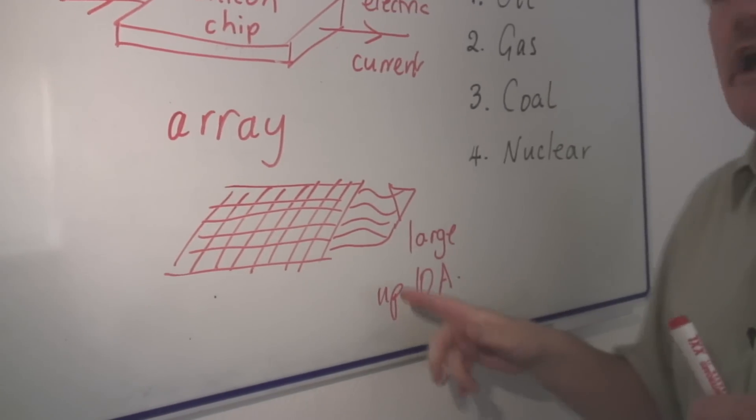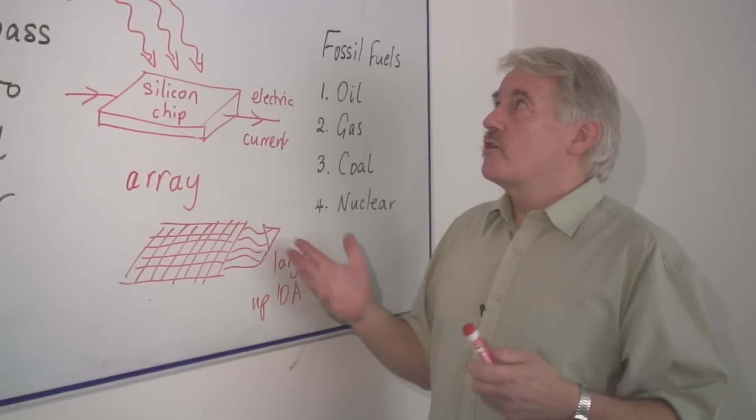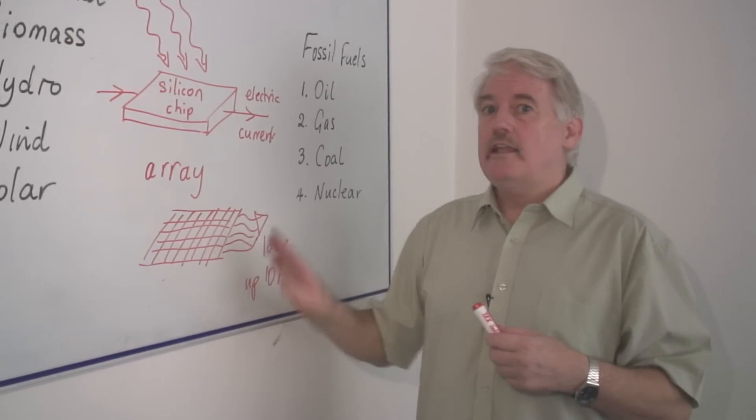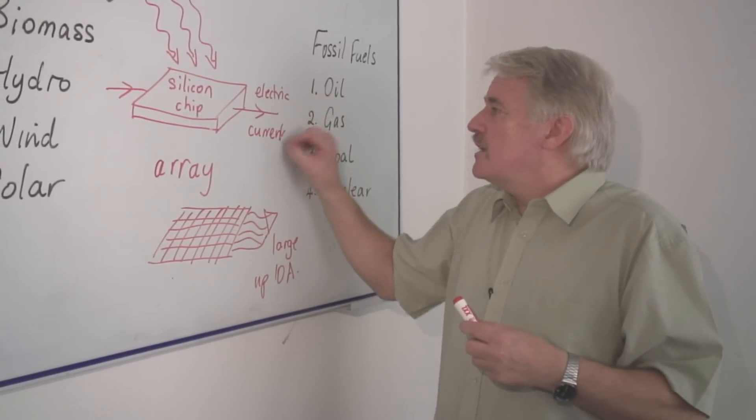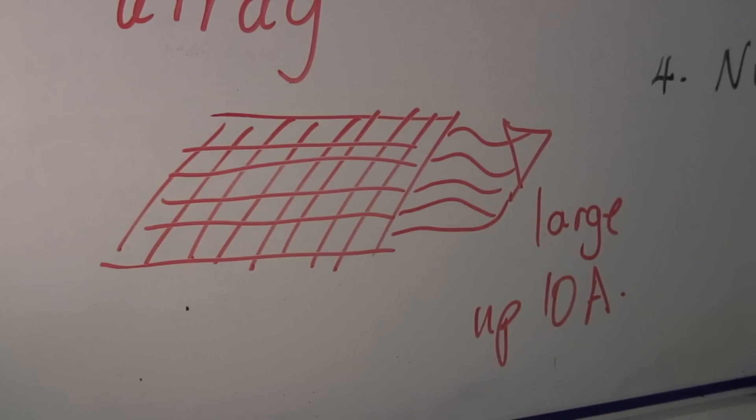This is enough to drive a heater, drive lights in a house. So solar energy requires a large array, each producing a tiny current. And these put together produce a current which is good enough to drive your home.